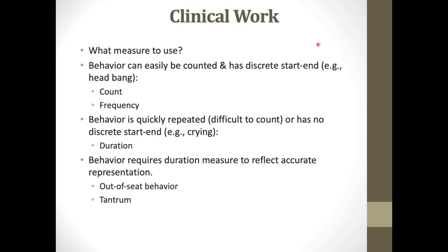General guidelines: if behavior can be counted — meaning it has a discrete start and ending — use a count or frequency. If behavior is quickly repeated and difficult to count, or has no discrete start or ending, duration is a good measure. If behavior requires a duration measure to accurately represent what's occurring — such as out-of-seat where there may be only two instances but each lasting five to ten minutes — use duration.